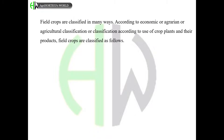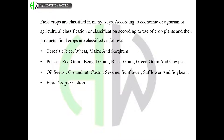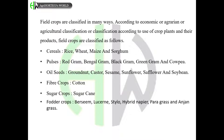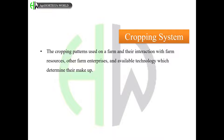Field crops are classified in many ways according to economic, agrarian, or agricultural classification, based on use of crop plants and their products. Field crops are classified as follows: cereals — rice, wheat, maize, and sorghum; pulses — red gram, bengal gram, black gram, green gram, and cowpea; oilseeds — groundnut, castor, sesame, sunflower, safflower, and soybean; fiber crops — cotton; sugar crops — sugarcane; fodder crops — berseem, lucerne, stylo, hybrid napier, para grass, and anjan grass; and green manure crops — sunhemp, dhaincha, and pillipesara.